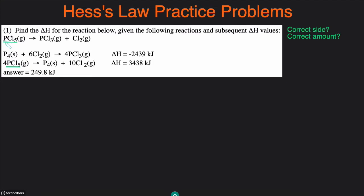In the end, we want one PCl5 on the reactant side, and there are currently four PCl5 on the reactant side. So it is on the correct side. But I don't have the correct amount — I want one, and there are four currently. So what we have to do is divide the entire reaction by four. I'll just write divide by four, and when you divide a reaction by four, you also have to divide the delta H by four.